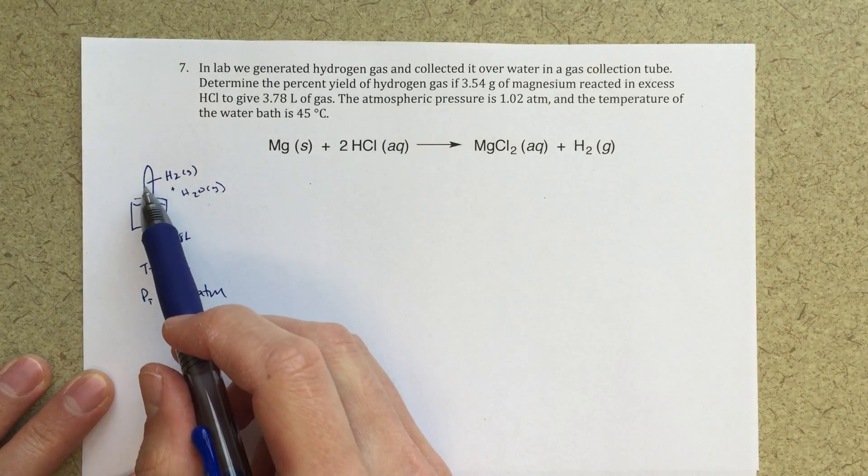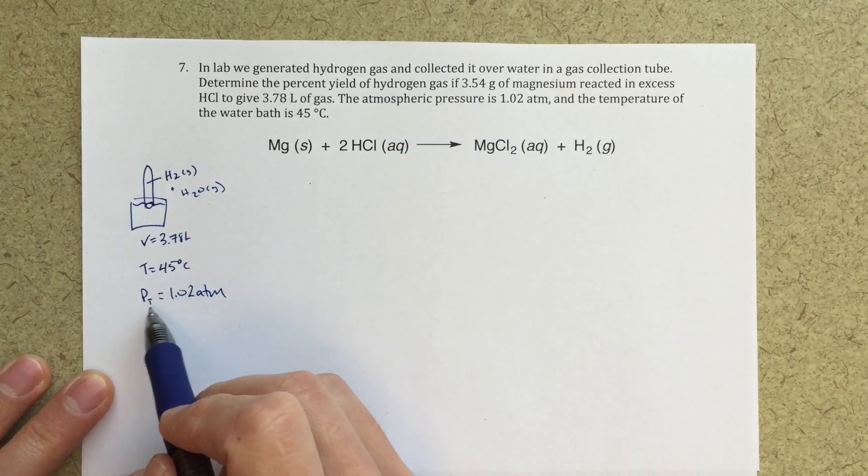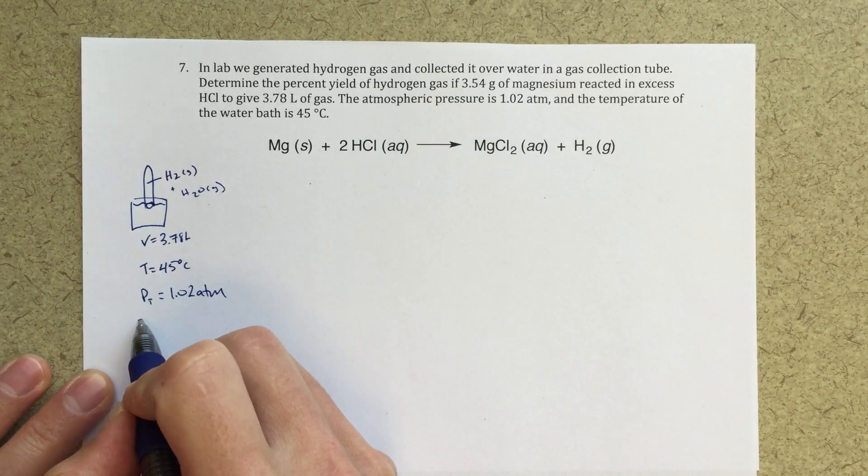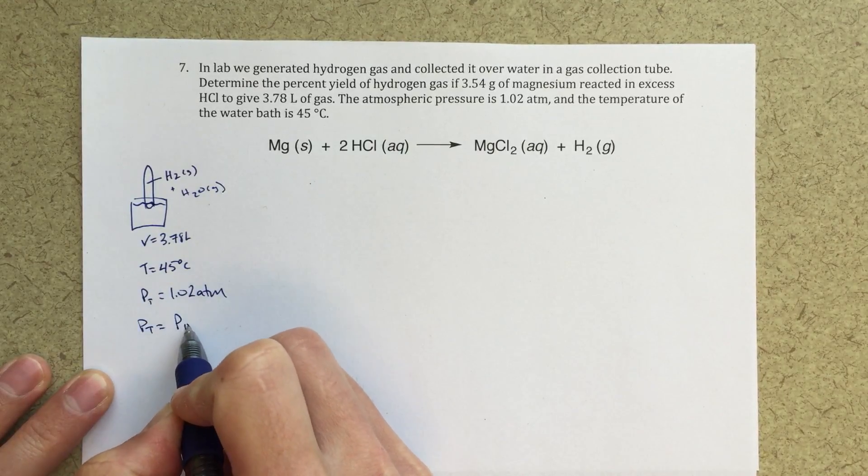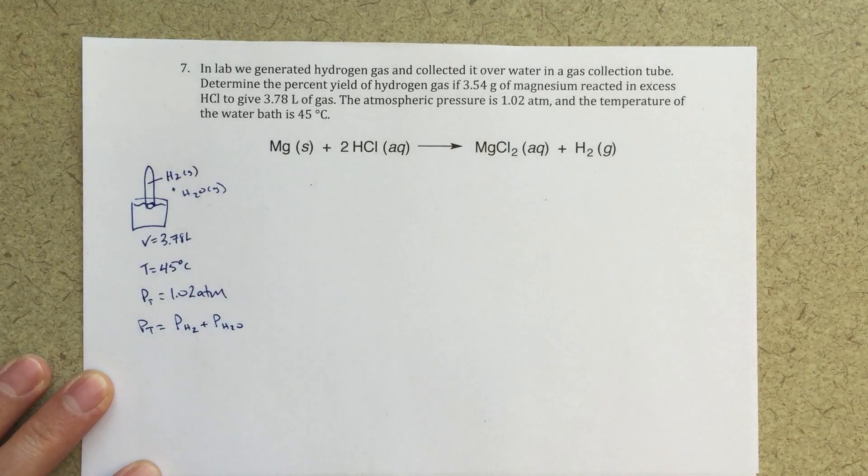There will be some water vapor going up into that space, and we need to take that into account essentially. So this total pressure, that's going to be the pressure of hydrogen gas plus the pressure of water vapor.